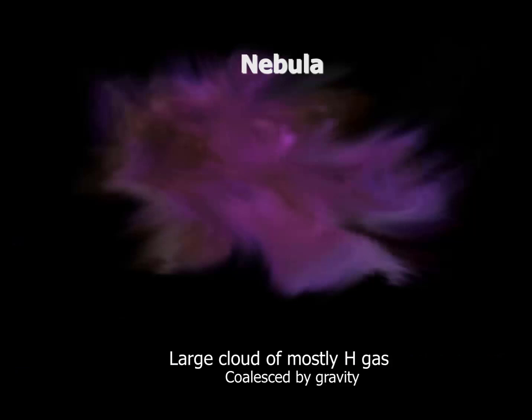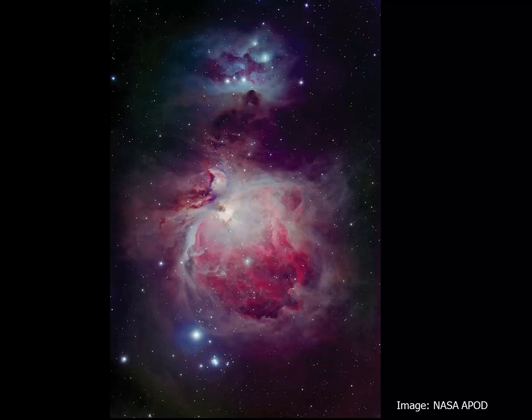So what is a nebula? A nebula is a large cloud of mostly hydrogen gas that is slowly coalescing due to the forces of gravity. When I say large, a nebula such as this one may be many light years across. Here's a professional image of the same region of Orion's sword, and we can see that the nebula has quite extraordinary detail.